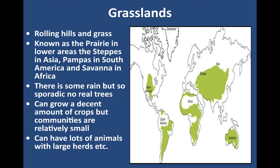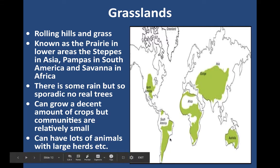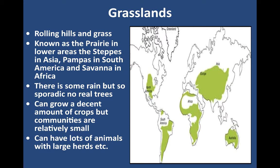Across the world we also have vast grasslands — rolling hills and grass that cover tremendous amounts of area. The most common types include the prairie, in lower non-elevated areas like North America; the steppes in Asia; the pampas in South America; and the savannah, which is famous because that's where you get all these giant herds of animals, especially in Africa. There is some rain, but it's sporadic, so you don't get a lot of trees, but you can grow a decent amount of crops. Communities are mostly small, and in Asia and Africa many of them are nomadic.